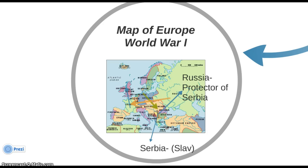Gavrilo Princip's assassination of the heir to the Austrian throne on June 28th, 1914 initiated a series of events leading to the outbreak of hostilities in Europe on August 4th, 1914. Austria felt the Serbian government was responsible, threatened to invade, and presented Serbia with a list of very strict demands. Russia, the protector of the Serbs, intervened and promised to support and protect Serbia. Austria, allied to Germany, then obtained the full support of the German Empire.